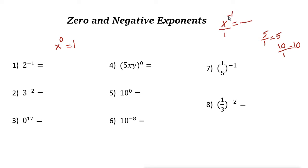When you flip the fraction, the sign of the power changes: if it is negative it becomes positive, and if it is positive it becomes negative. So x to the power of negative 1 over 1 is actually 1 over x — we don't write the power of 1, so the answer is 1 over x.